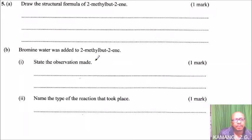Question number 5a: Draw the structural formula of 2-methylbut-2-ene. This is an alkene, and you get the structure by drawing four carbons in a row with bonds. The double bond is put between the second and third carbon.